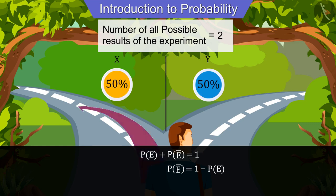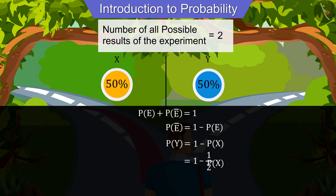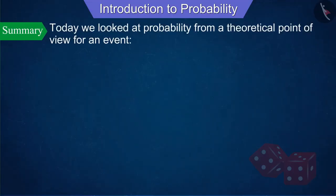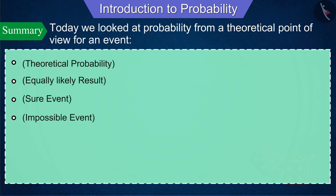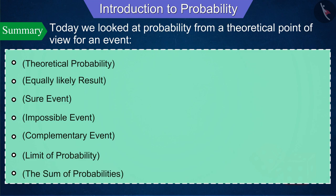If we look at the situation where the probability of choosing road X is one upon two, then we can find the probability of choosing road Y using the complementary event formula. Hopefully now you have a good understanding of probability. Today we looked at probability from a theoretical point of view — covering theoretical probability, equally likely outcomes, sure events, impossible events, complementary events, the limit of probability, and the sum of probabilities.